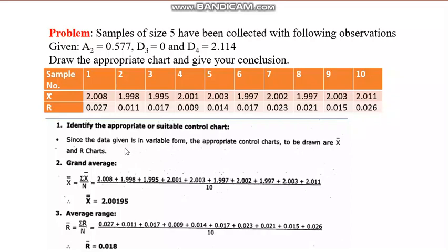To find the central line for the X-bar chart, use X double-bar = sigma X-bar divided by n. Summing all X-bar values and dividing by the 10 samples gives X double-bar = 2.00195. Next, calculate average range R-bar for the R chart center line: R-bar = sigma R divided by n = sigma R divided by 10, giving R-bar = 0.018.